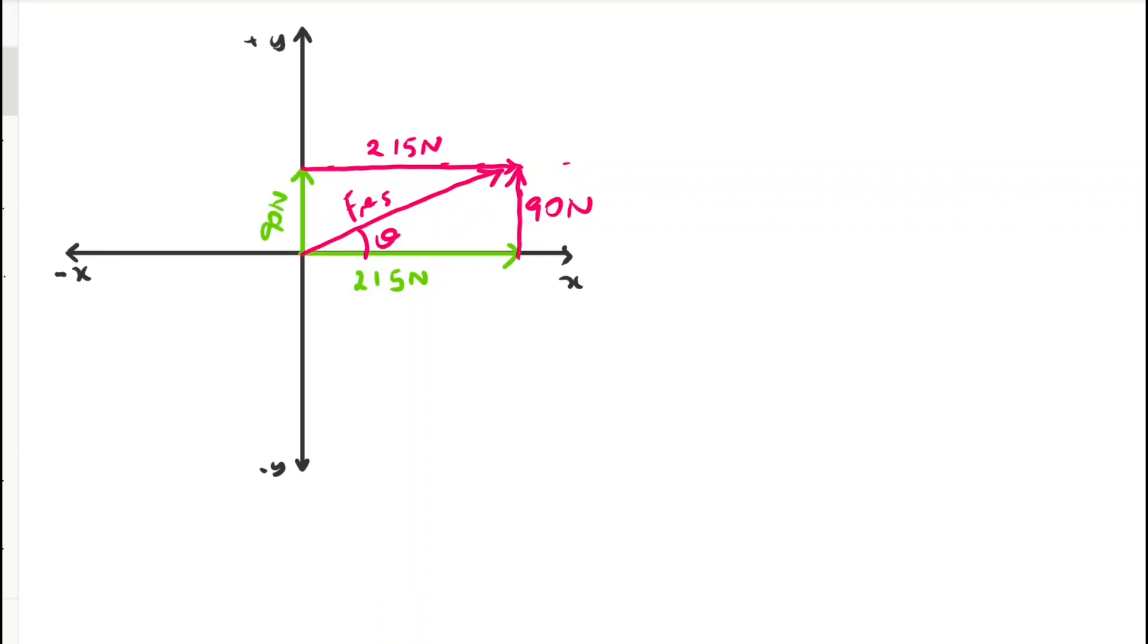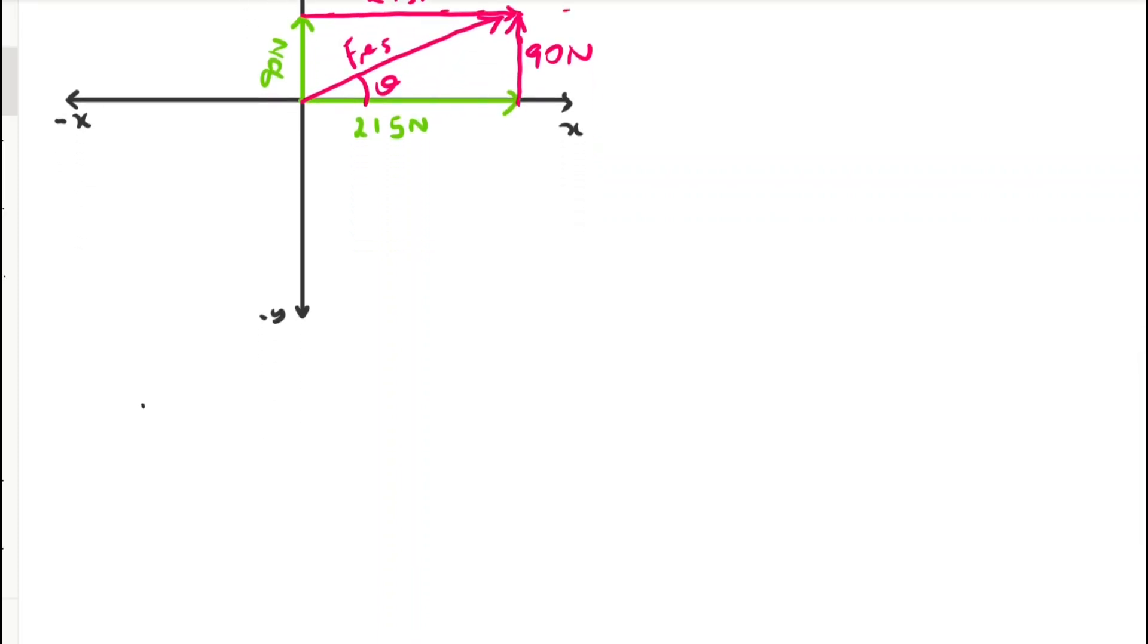we're going to apply the Pythagorean theorem. Now this means f-res is equal to the square root of 215 squared plus 90 squared.